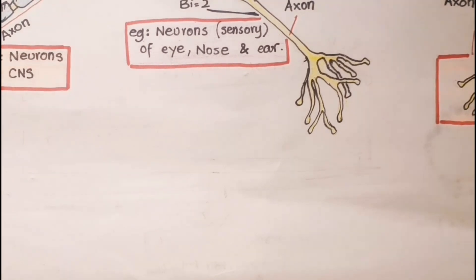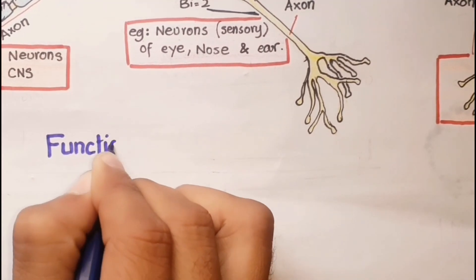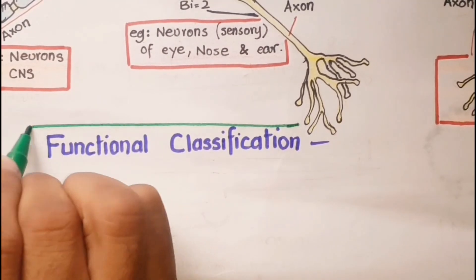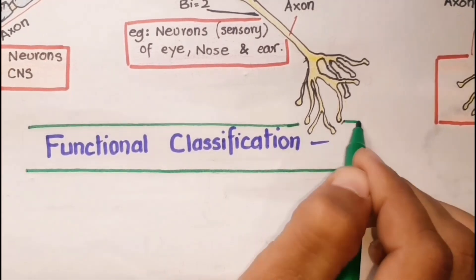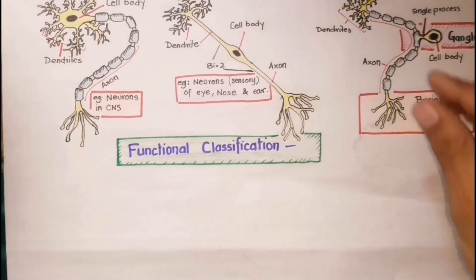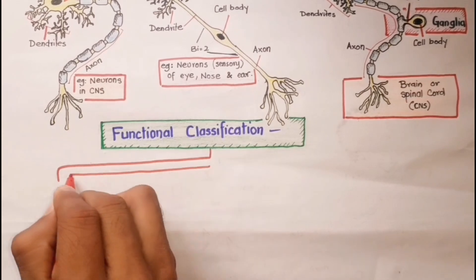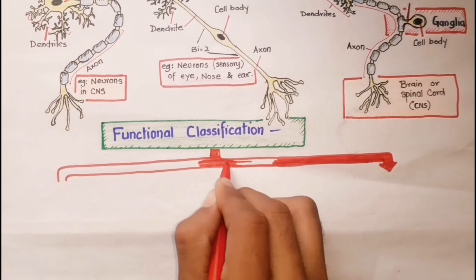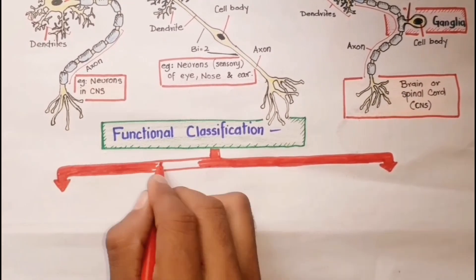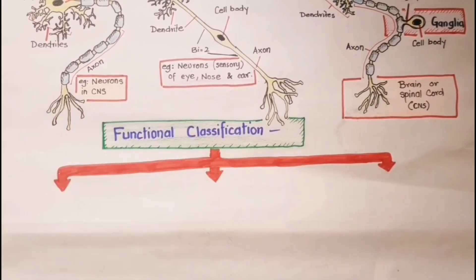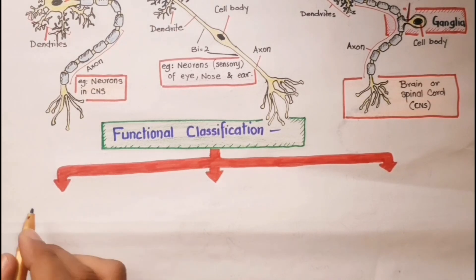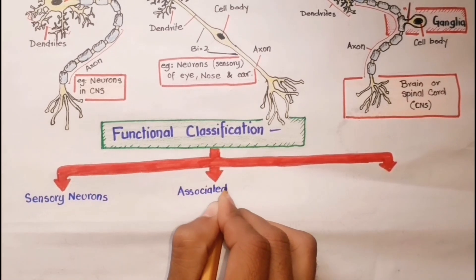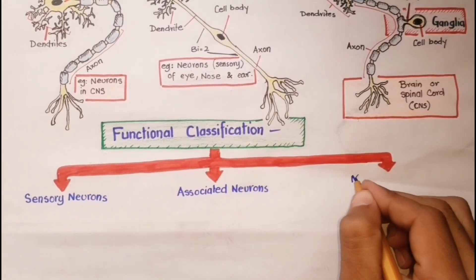Besides structure, neurons also vary in function. Different neurons may conduct impulses into the CNS, conduct impulses from one area of the brain or spinal cord to another, or conduct impulses out of the brain or spinal cord. On the basis of these functional differences, neurons are grouped as sensory neurons, association neurons, and motor neurons.